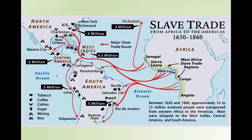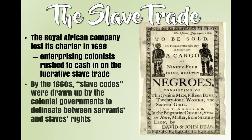Indentured servants are technically free men — they're bonded to you for a certain amount of time, but after that they're free. A slave is like a piece of property that you own, so you could have that slave forever. The Royal African Company lost its charter in 1698, and because of that, a bunch of colonists rushed in to make a profit on the slave trade. By the 1660s, you're going to see slave codes drawn up by colonial governments to delineate between servant and slave rights.